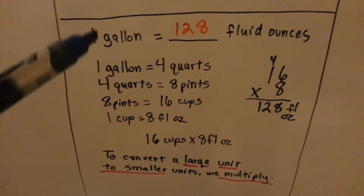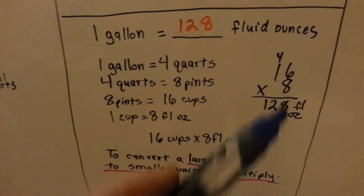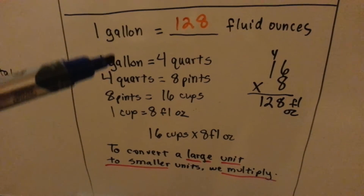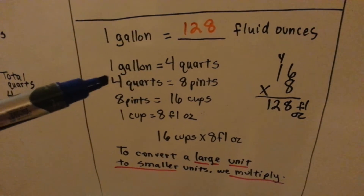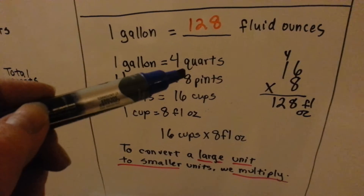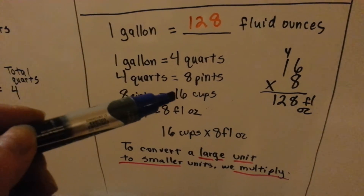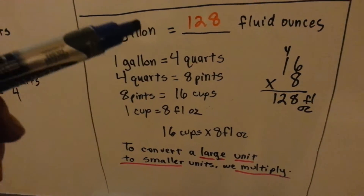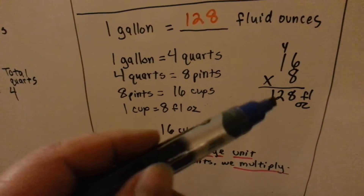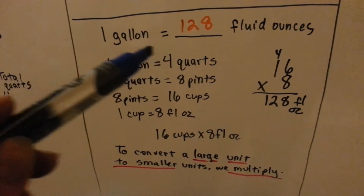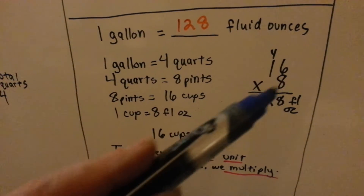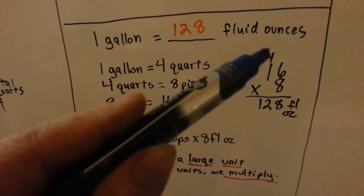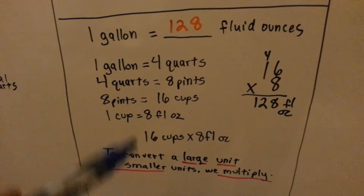When we go the other way and have a large unit we want to convert to smaller units, we multiply. We can even do it in steps: 1 gallon is 4 quarts, 4 quarts is 8 pints, 8 pints is 16 cups. If 1 cup is 8 fluid ounces and there are 16 cups to a gallon, we do 16 times 8. 6 times 8 is 48, carry the 4; 8 times 1 is 8, plus 4 is 12. There are 128 fluid ounces in a gallon.